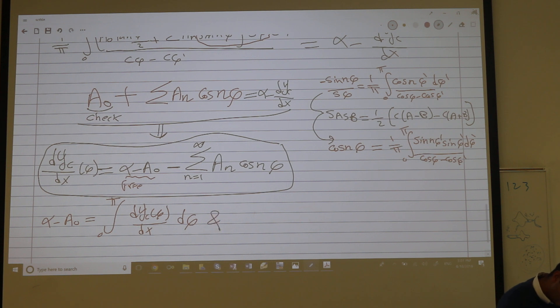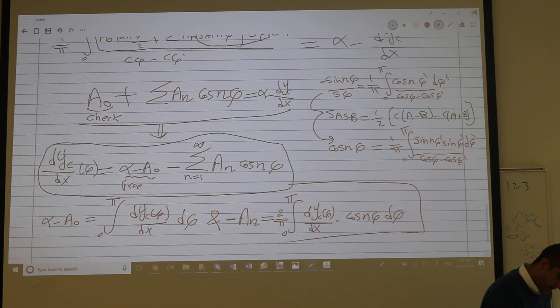And any of these terms, so negative a n is integral over the period, your function multiplied by cosine n phi d phi. And we have here two, and we have here two. Okay so we're done.